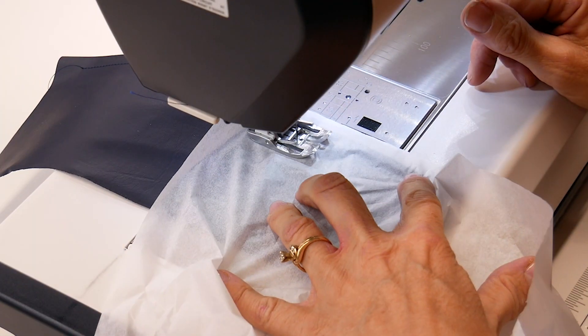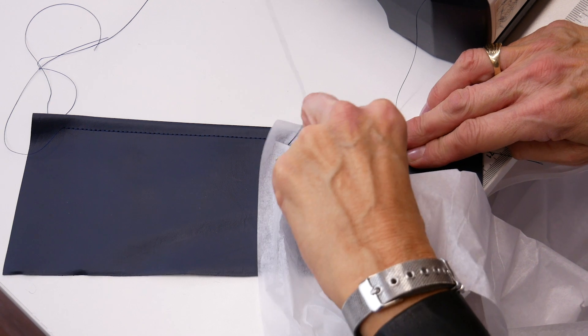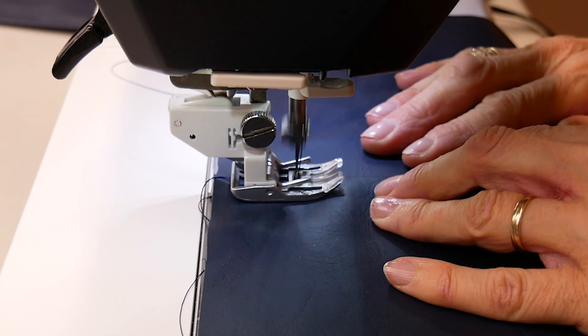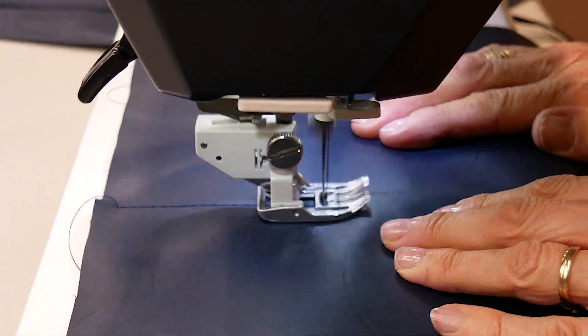If you don't have a walking foot, try stitching over strips of tissue paper, then pulling the paper away later to prevent the sticking. This is only necessary when you are stitching on the vinyl side, as in when you are top stitching.